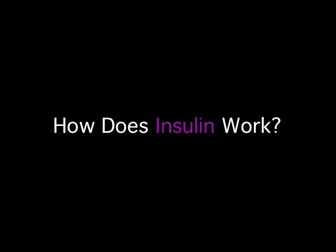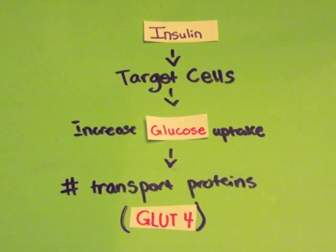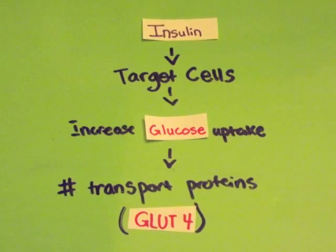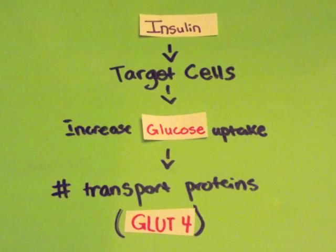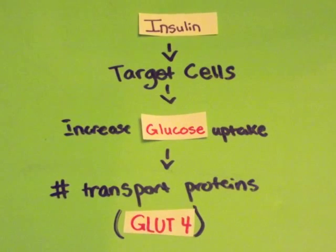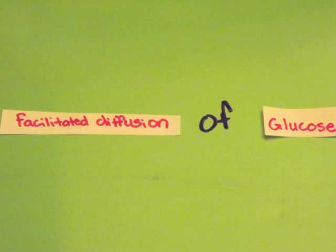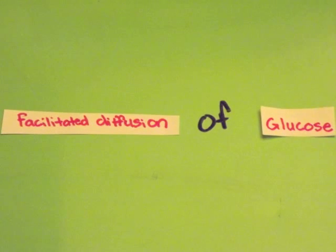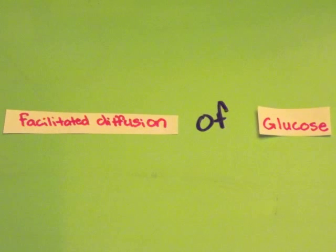Insulin affects its target cells in a variety of ways. The rate of glucose uptake is increased by the number of glucose transport proteins available in the plasma membrane. GLUT4 is responsible for insulin-regulated glucose transport into the muscle and adipose tissue. Facilitated diffusion is used by transport proteins to carry glucose along its concentration gradient into cells without using any ATP.